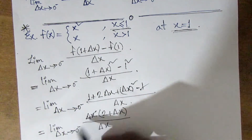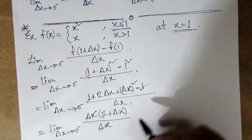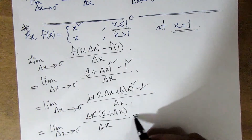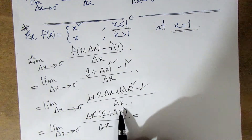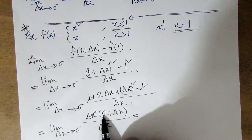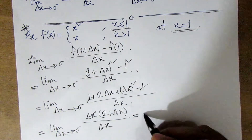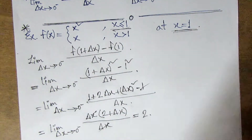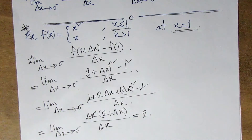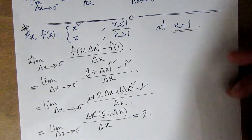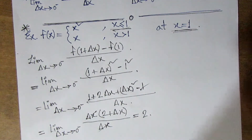As Δx approaches 0, we get the result. Dividing by Δx and taking the limit, we have 2 as the left-hand derivative result.